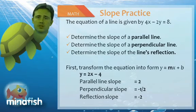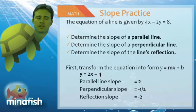The parallel slope is the same, so it's 2. The perpendicular slope is the opposite reciprocal, so it's negative 1 half. And the reflection is just the negative, so it's negative 2.